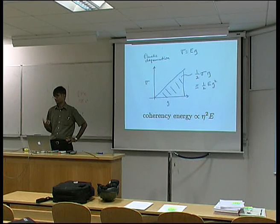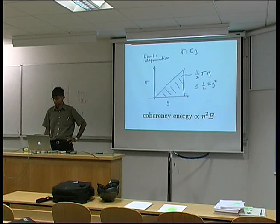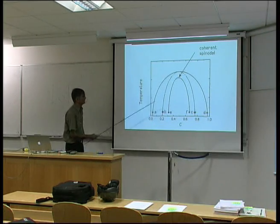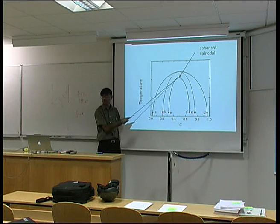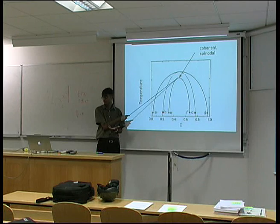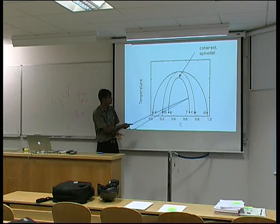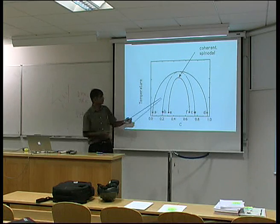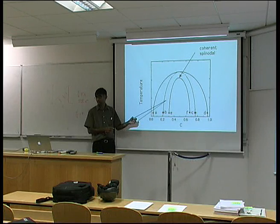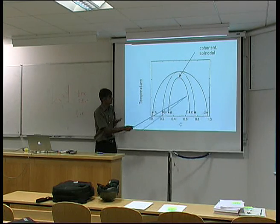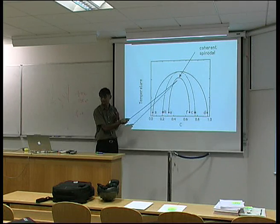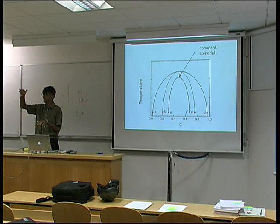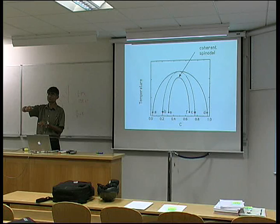We need to take account of that strain energy - it has to be provided by the free energy change. That means things will not tend to happen when we are within the chemical spinodal; we'll have to under-cool further in order to account for that strain energy. This gives a third curve called the coherent spinodal. You won't get spinodal reaction in the outer region because there isn't enough free energy to account for that strain, but it will happen once we under-cool to within the coherent spinodal.